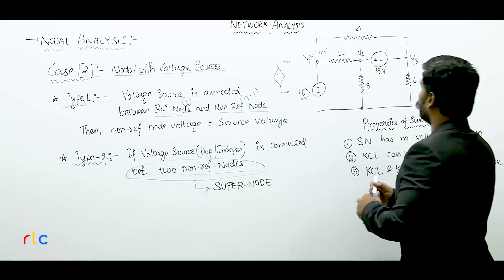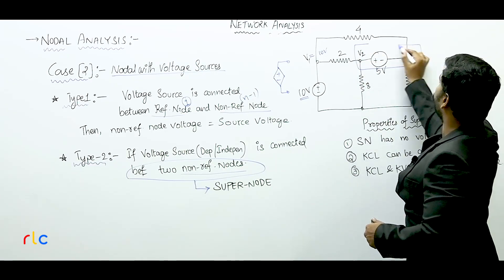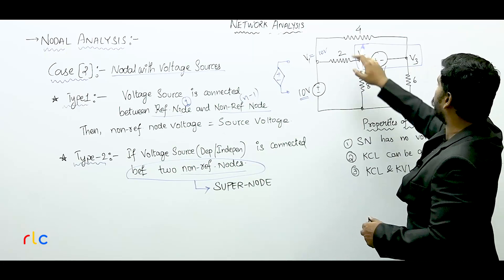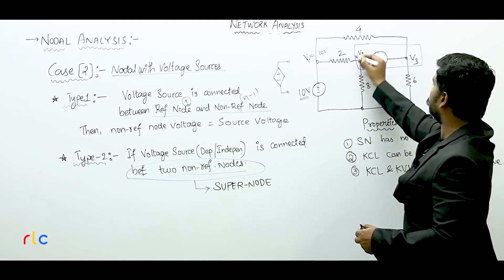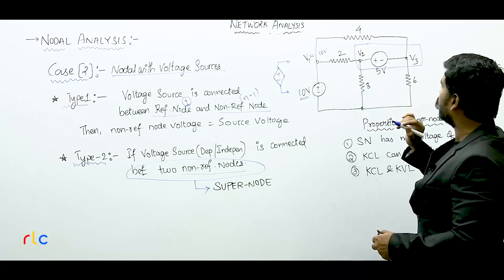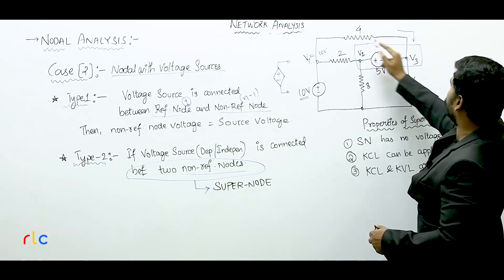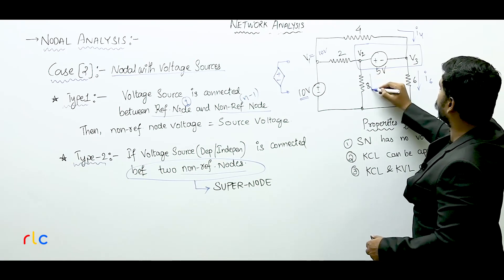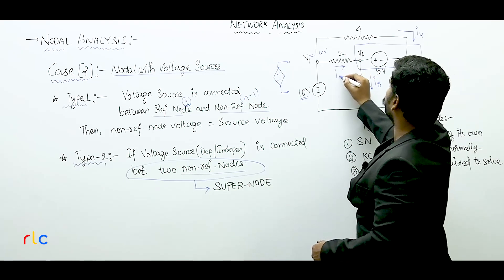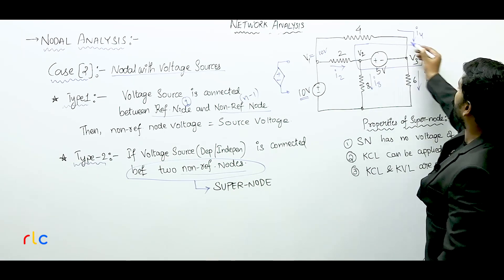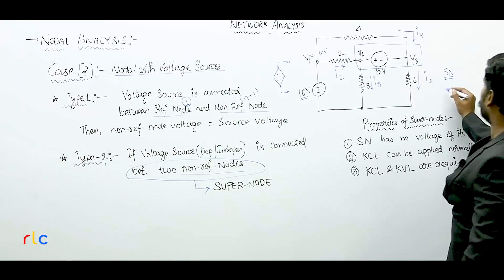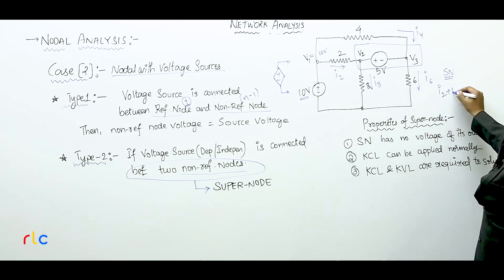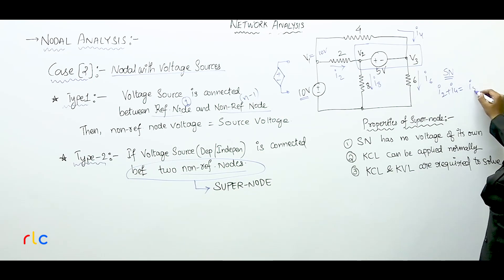What is the super node? We want to have a single node. Every single node is connected to one node. Consider the two nodes. The voltage V2 is 5 volts. If we have these nodes, the nodes are connected to the single node. The current comes from the 4 ohms, the 6 ohms — let us say this is I4 and I6, here is current I8, and this is I2. We apply KCL: I2 plus I4 incoming is equal to I8 plus I6 outgoing.